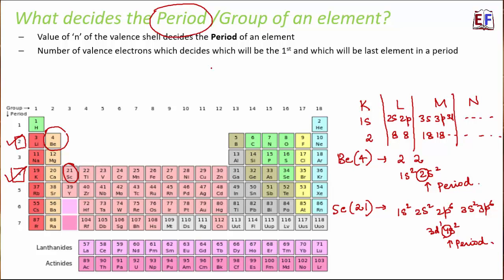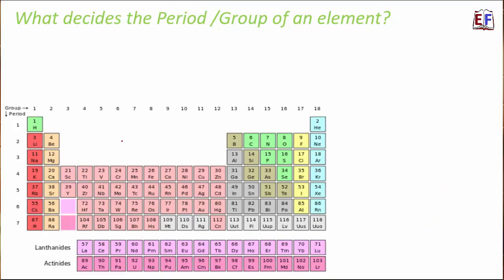For example, hydrogen is 1, lithium is 2,1, sodium is 2,8,1, potassium is 2,8,8,1 — all first elements of their periods have one valence electron. As you move from left to right across a period, the number of valence electrons increases by one consecutively, until at the end of the period the last element has a completely filled outermost shell.